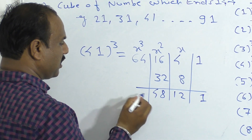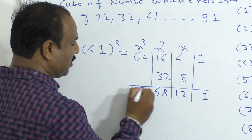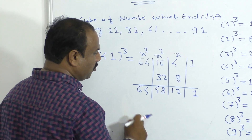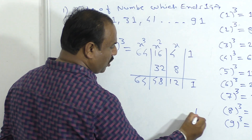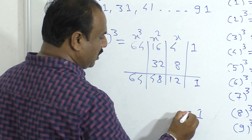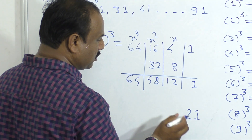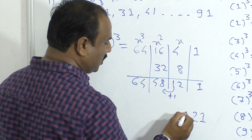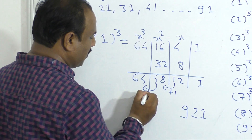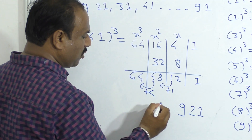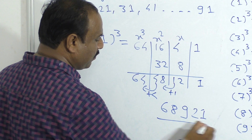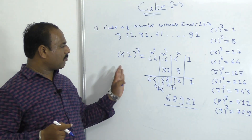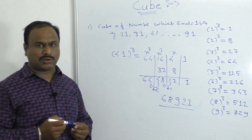We have 1 here and the number is equal to 64. The number is equal to the total unit digit, so the number is equal to 1, then 2. This is 1. So the number is equal to 8 plus 1. 9 and 4 is equal to 6, and 64 plus 4 is equal to 68. Result: 68921.